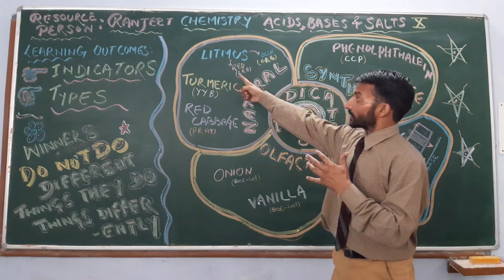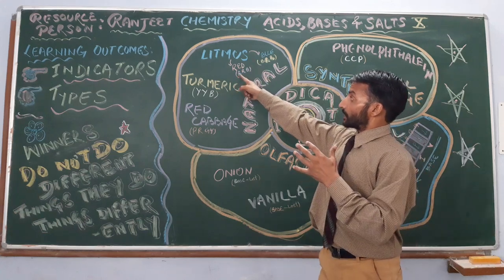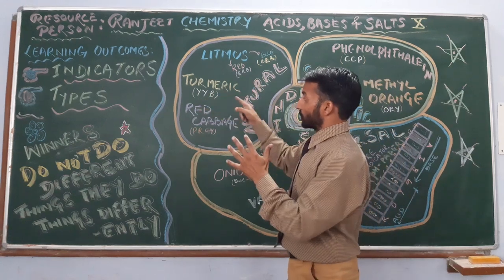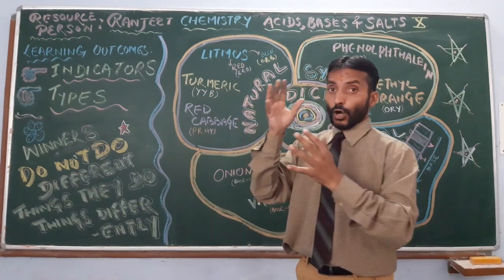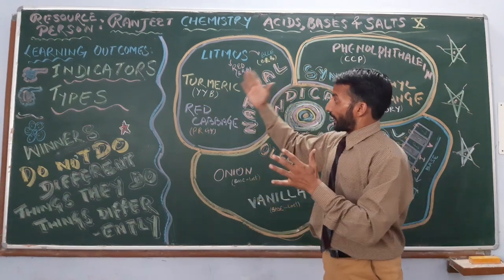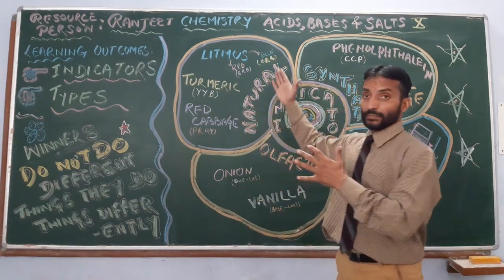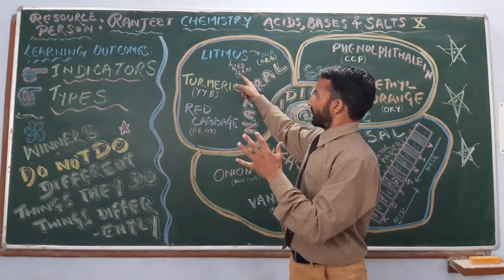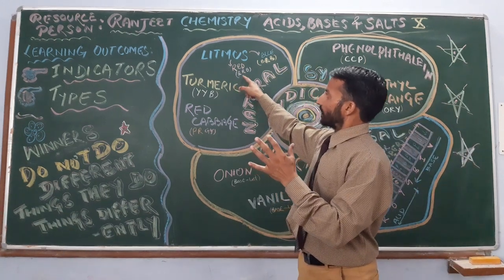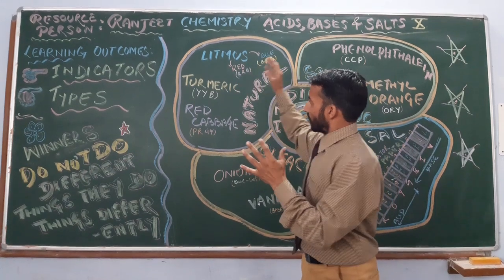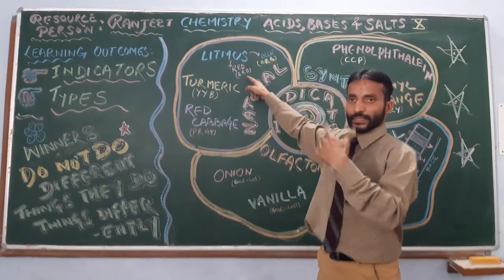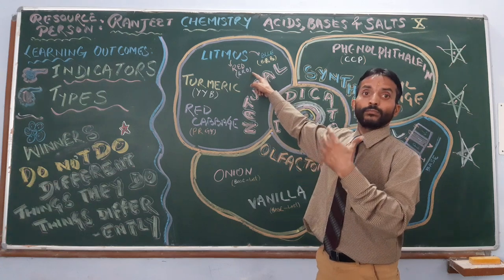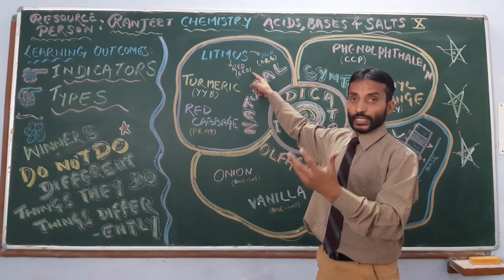These are having different colours in acid and different in base. Red litmus — in its original colour it is red. In acid it remains red, and in base it becomes blue. Red becomes blue in the base.